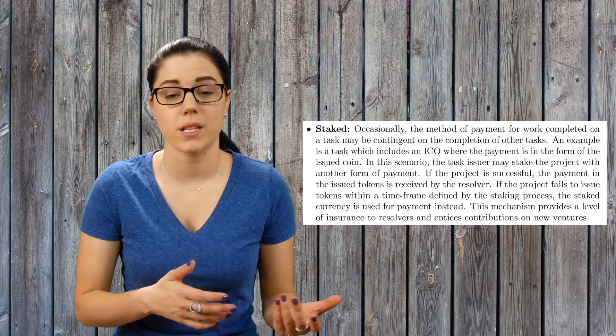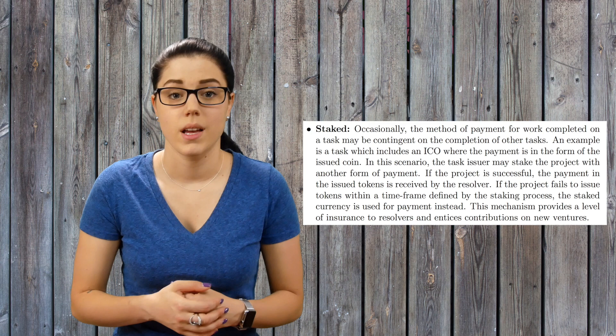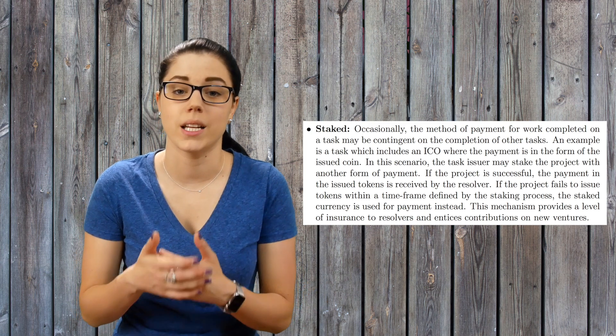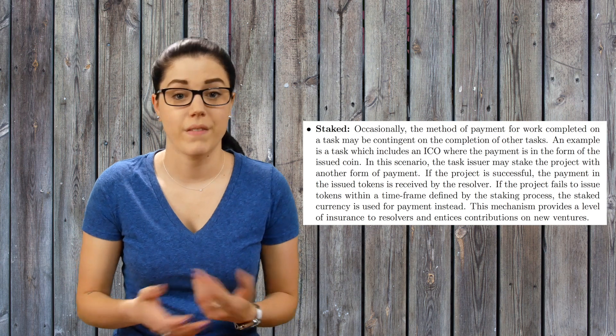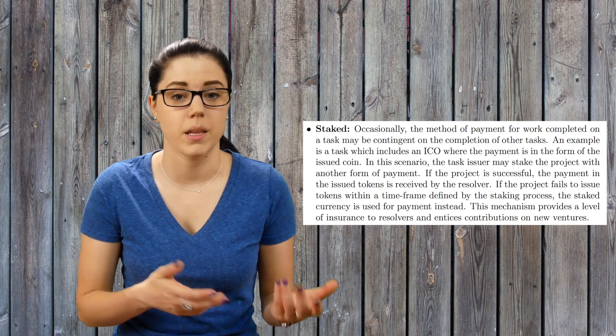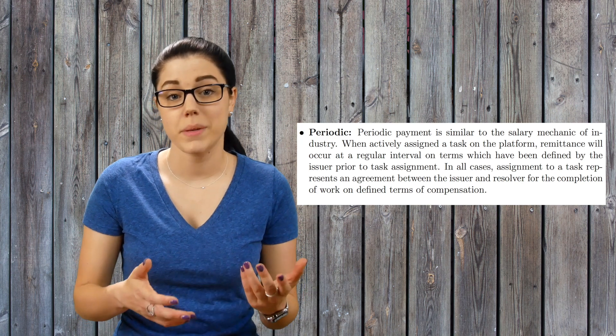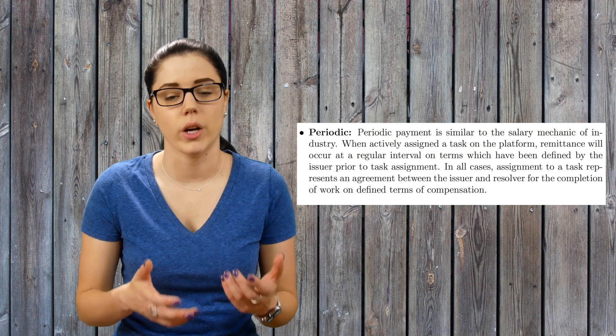Staking is the payment method that's going to be best for complex tasks or ICOs as it allows staking in one currency and then upon completion payment can be provided in another coin or a token. If after some time the token cannot be provided then the payment can be made via the staked currency. The periodic payment is the closest to the traditional salary payment where the payment's paid out by agreed amounts on a regular interval.